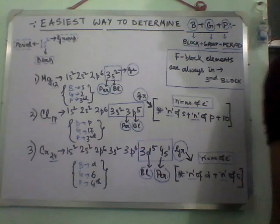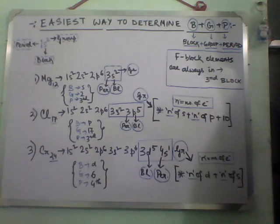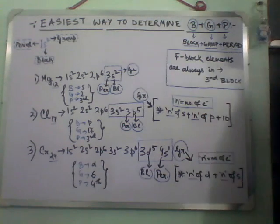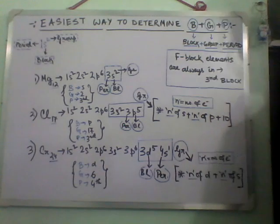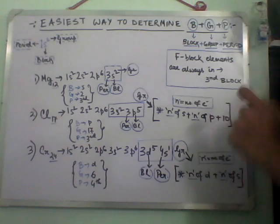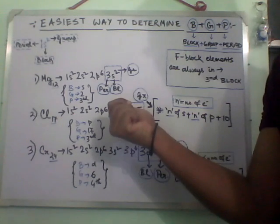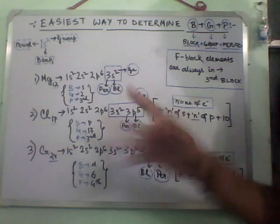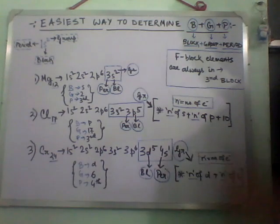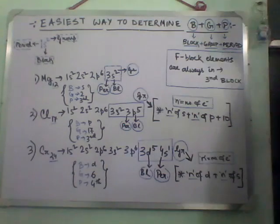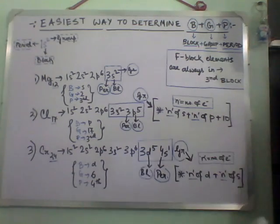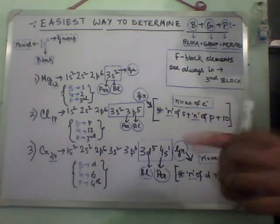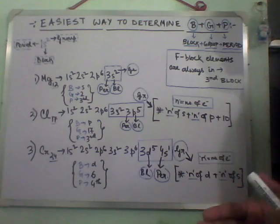Now chlorine. We first write the ground state configuration: 1s2 2s2 2p6 3s2 3p5. Here is the trick: n of s plus n of p plus 10, where n is the number of electrons. The electrons on s are 2, electrons on p are 5; adding them gives 7, plus 10 equals 17 — 17 will be the group. When s and p appear at the last of the configuration, add those electrons and plus 10 to determine the group.